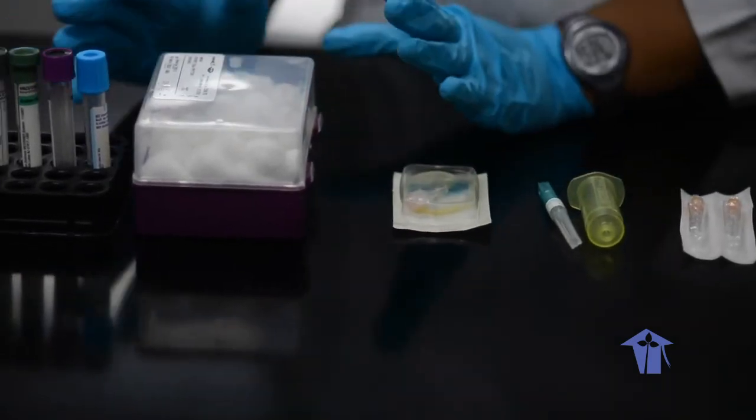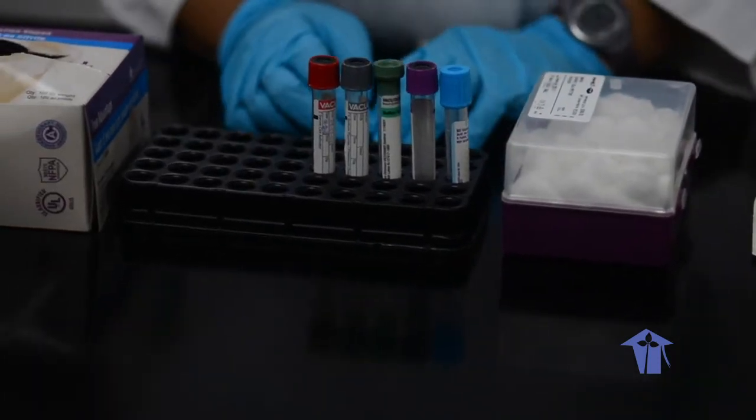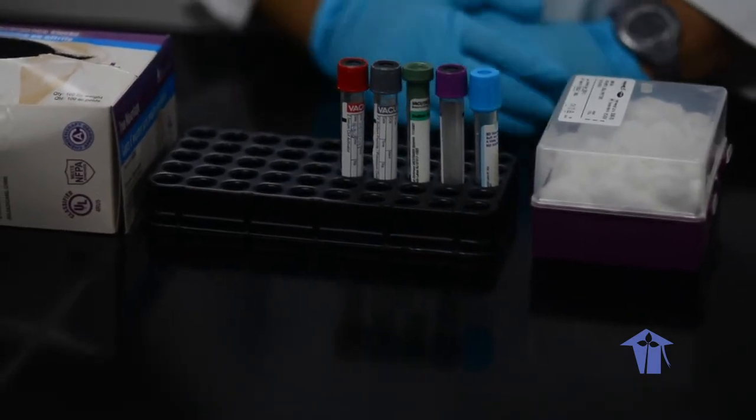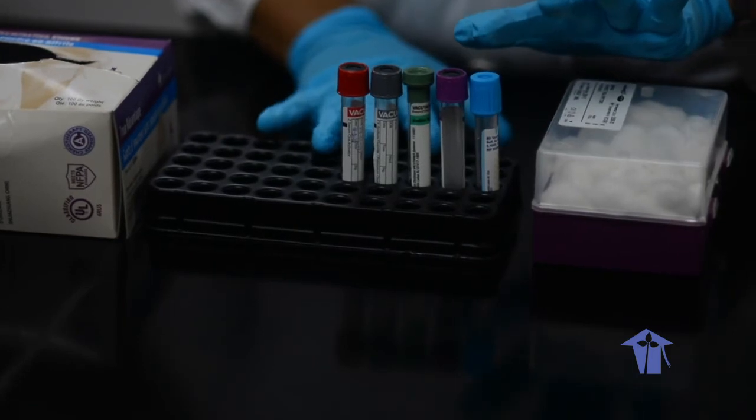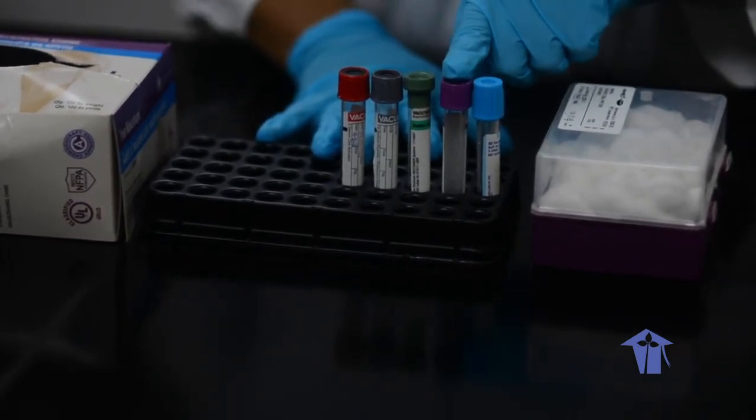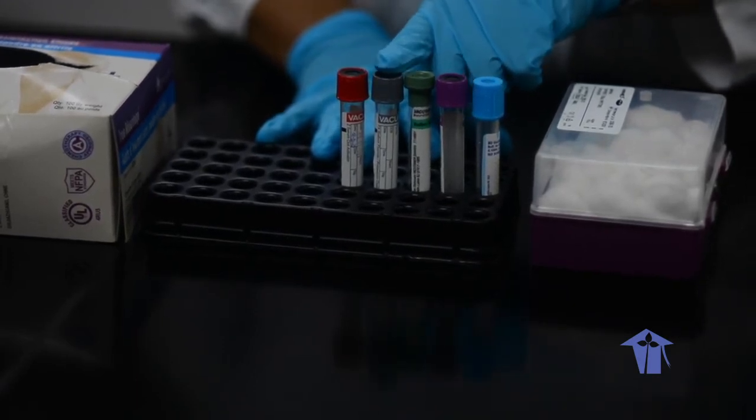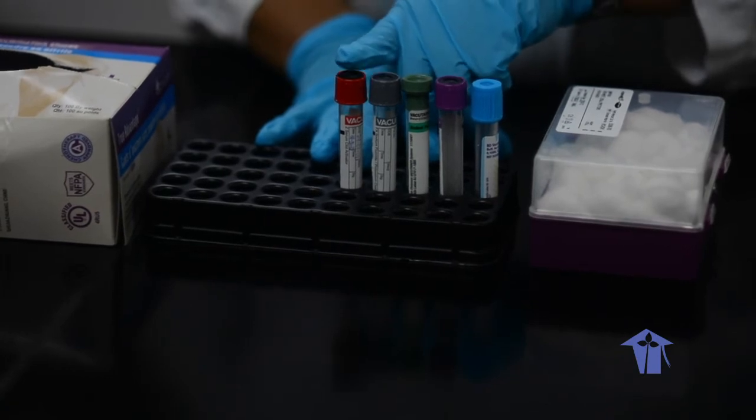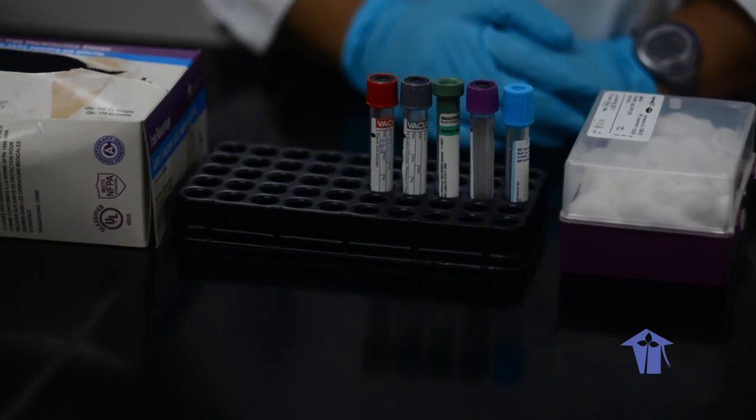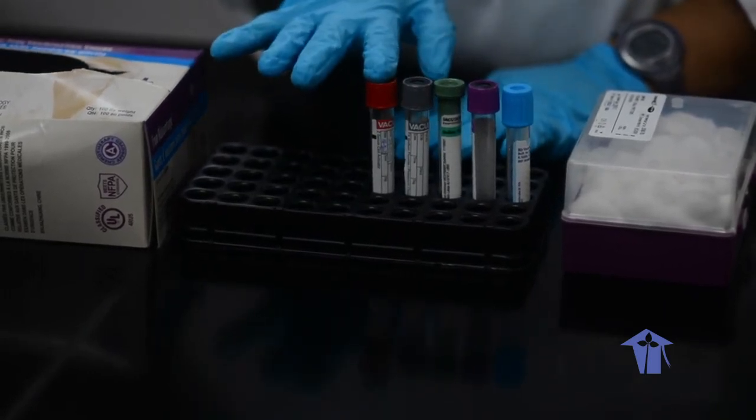We have cotton. We have the actual tubes. So the tubes are color coded. So we have a light blue, we have a purple or lavender, we have a green, we have a gray, and we have a red tube. So each one of these have different anticoagulants in them, with the exception of the red. There's no anticoagulant in the red.